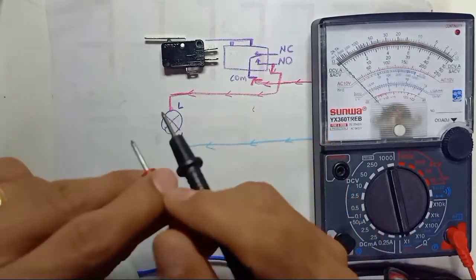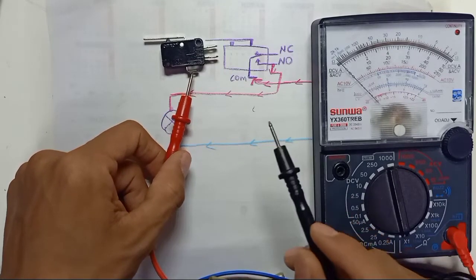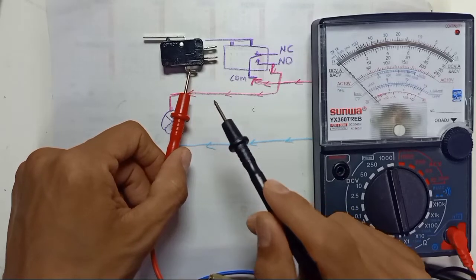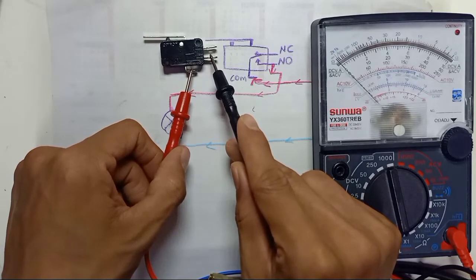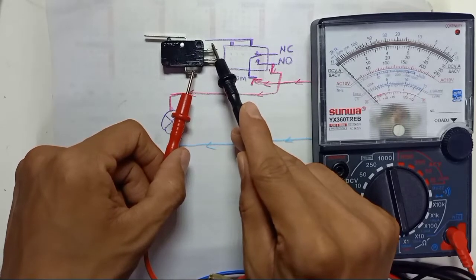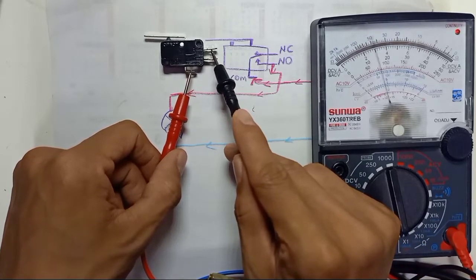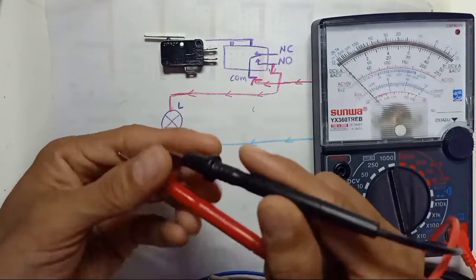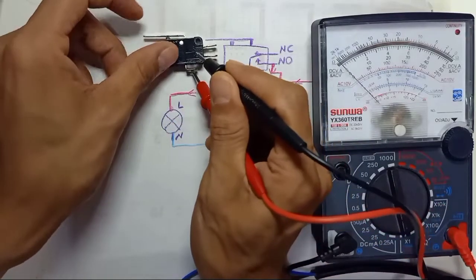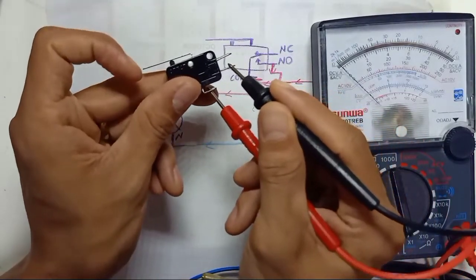This micro switch has three terminals. Common is where power comes in first. Normally Open means the switch is always off by default. Normally Closed means if you connect from common to normally closed, your switch is going to be always on.